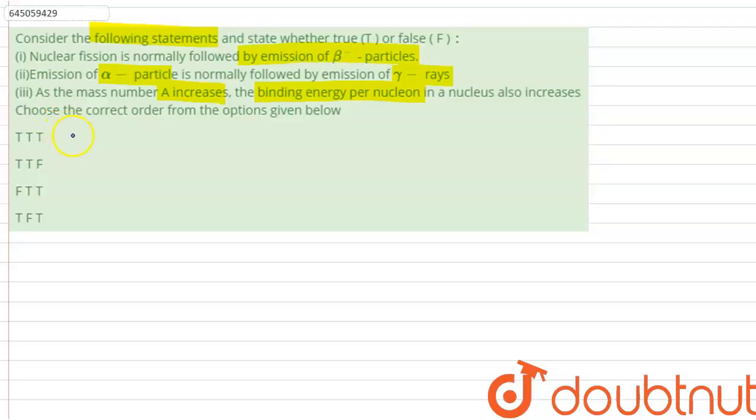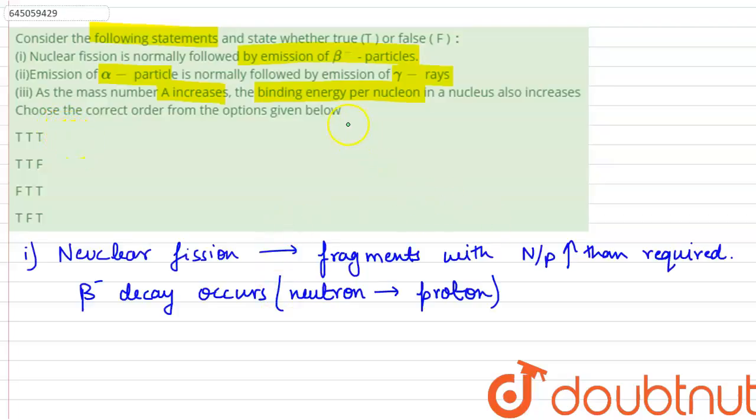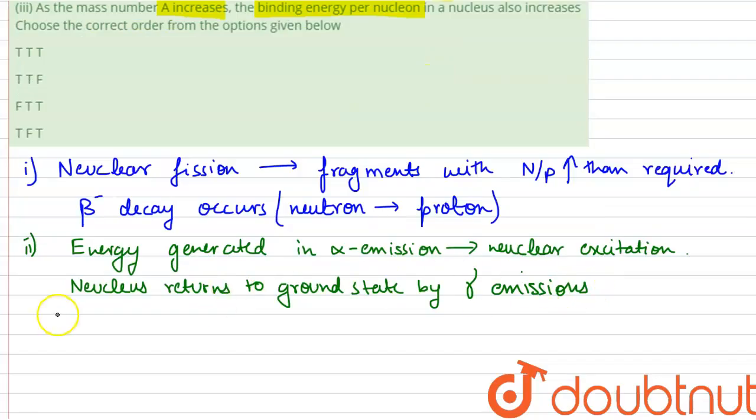In statement two, sum of the energy generated in alpha emission goes into nuclear excitation. The excited nucleus returns to ground state by gamma emissions. Therefore, statement two is also true.